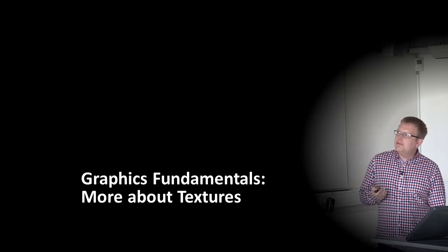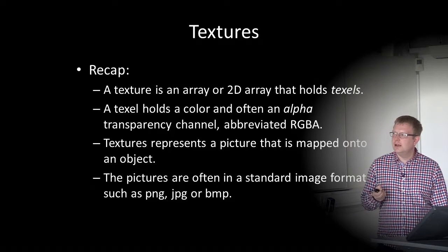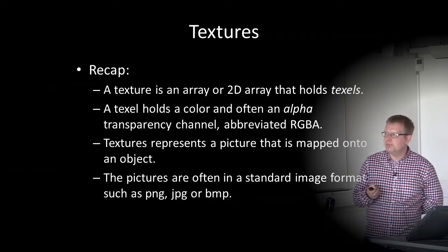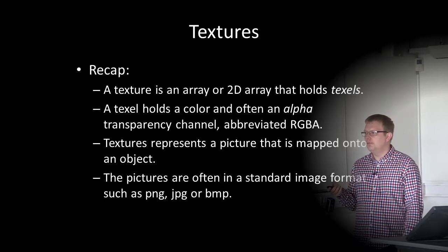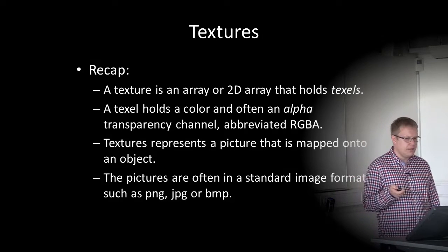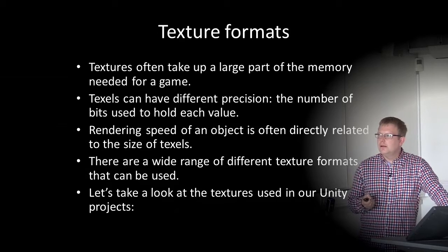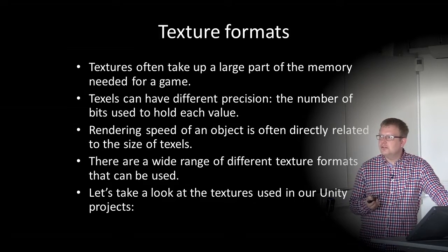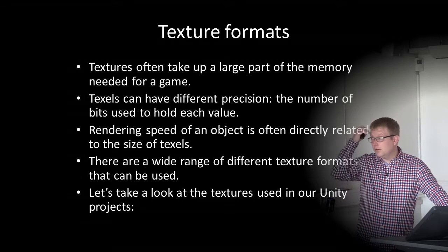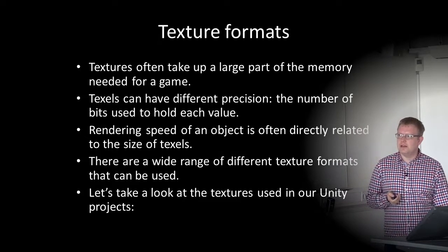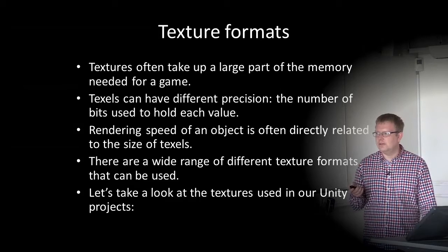Some more about textures. To recap: a texture is a 2D array holding texels, where each texel holds a color RGB value and often an alpha transparency channel (RGBA). Textures represent a picture mapped onto an object, often in standard image formats such as PNG, JPEG, or BMP. Textures often take up a large part of the memory needed for a game. To optimize, texels can have different precision — the number of bits used to hold each value. Rendering speed is often directly related to texel size, so lower precision texels render faster.